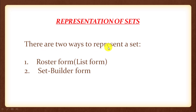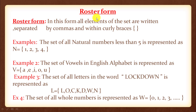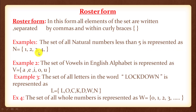There are two ways to represent a set. The first is roster form or list form; the second is set builder form. In roster form, all elements of the set are written separated by commas and within curly brackets. For example, the set of natural numbers less than 5 is represented as N = {1, 2, 3, 4}.